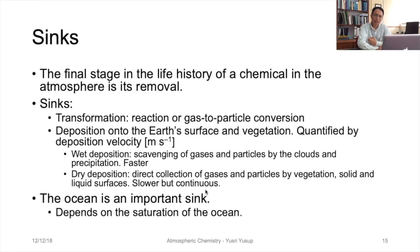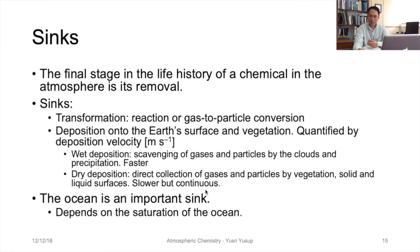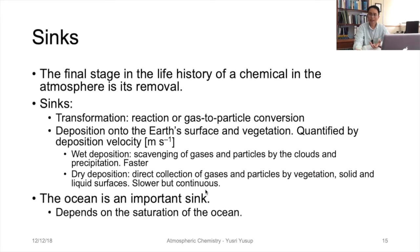The ultimate stage in the life history of a chemical or gas in the atmosphere is its removal, and this removal occurs through its sinks. Sinks can occur through transformation or deposition. Transformation means the chemical or gas changes to a particle due to a reaction, or through gas-to-particle conversion. Through deposition, these chemicals deposit onto the Earth's surface or vegetation, and we can quantify the rate of this deposition through the deposition velocity parameter, with units of meters per second.